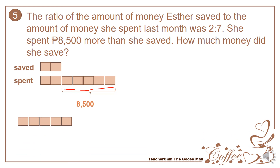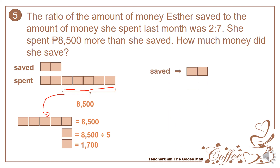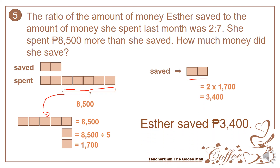I have here 8,500 as five parts, which is equal to 8,500. I want to find out the value of each part, so I have 8,500 divided by 5 since I have five equal parts. Each part is equal to 1,700. Take note that there are two parts for save, and each part is equal to 1,700. So 2 times 1,700 is equal to 3,400. Therefore, Esther saved 3,400 pesos.